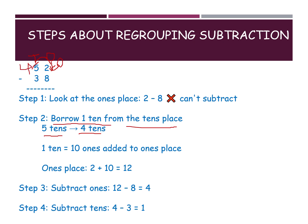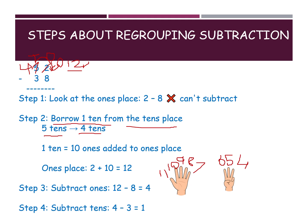Now 2 becomes 12 and 5 becomes 4. We can do 12 minus 8 because the top number is now greater. Keep 12 in your mind and open 8 fingers, counting backward: 11, 10, 9, 8, 7, 6, 5, 4. So 12 minus 8 equals 4.